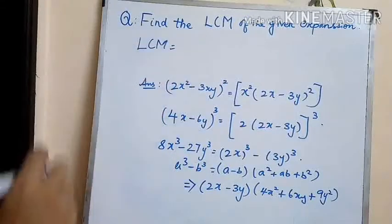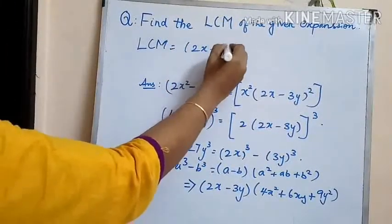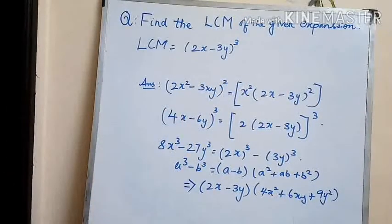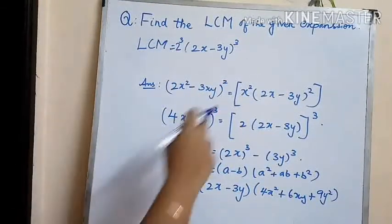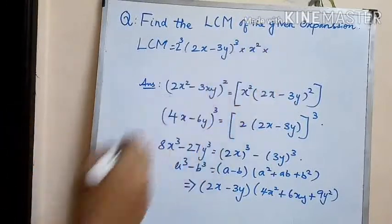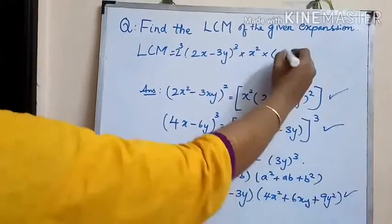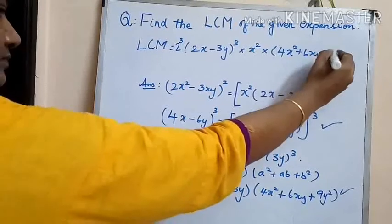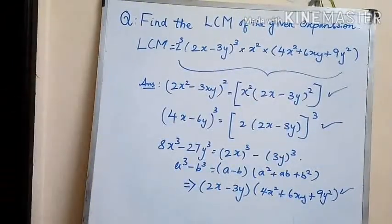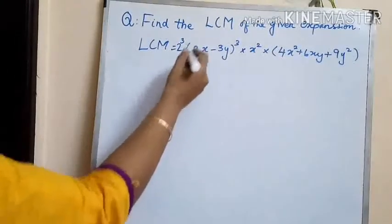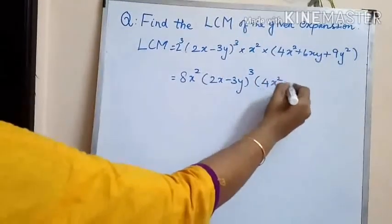Therefore the LCM of these polynomials: the common factor 2x minus 3y appears at maximum power of cube, so we take 2x minus 3y whole cube. The numerical part is 2 cubed, the variable part is x squared, and we include 4x squared plus 6xy plus 9y squared. So the LCM is 8x squared into 2x minus 3y whole cube into 4x squared plus 6xy plus 9y squared.